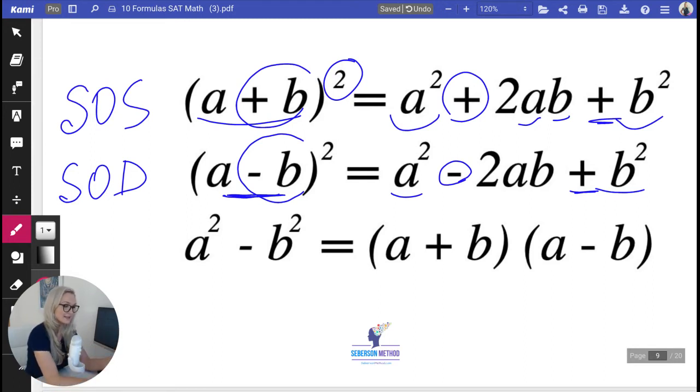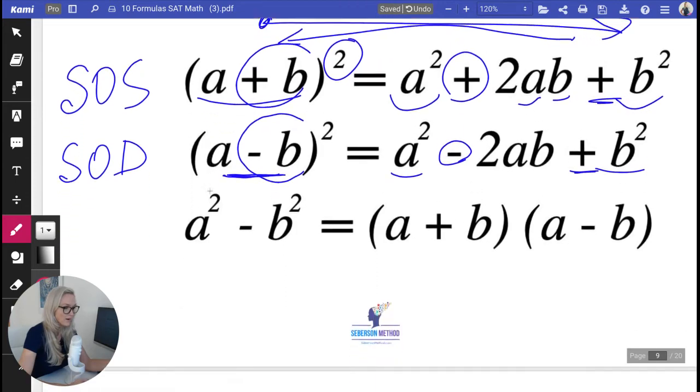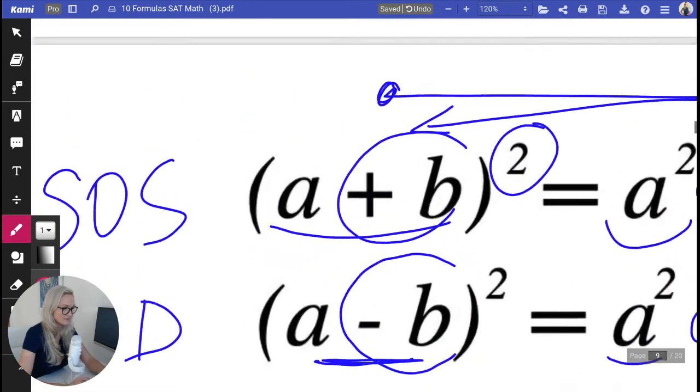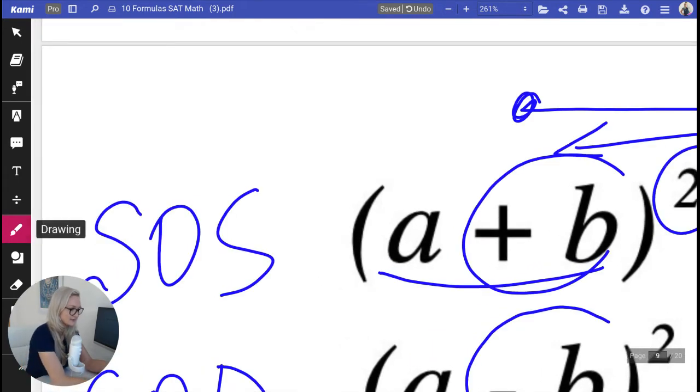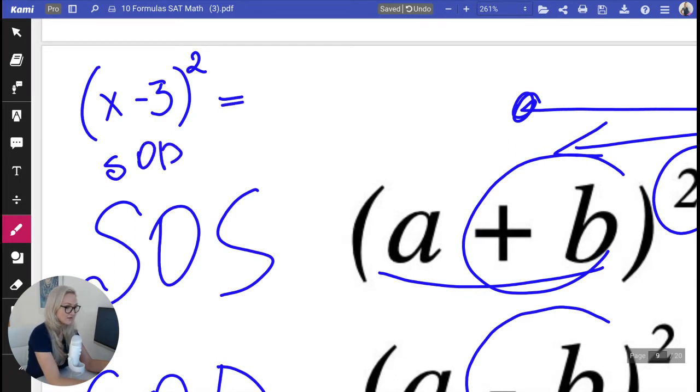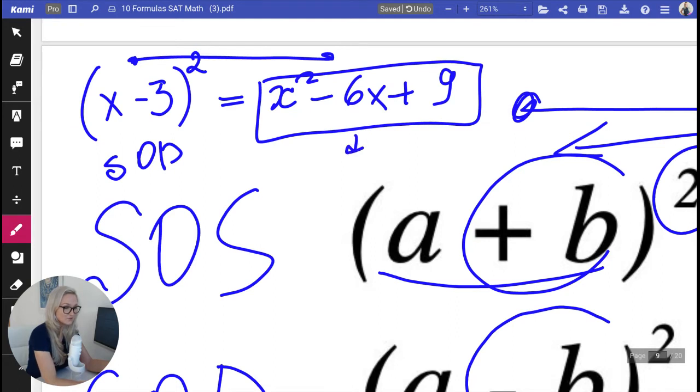So SOS, SOD, super important. Like I said, not only from here to here, but also backwards. Let me show you what I mean by that. So when you see something like, I will just zoom in here, if you see something like x minus 3, all of it is squared, many of you will recognize that this is SOD, square of a difference. And then you have x squared minus 6x plus 9. Also, this is going from right to left, but are you able to see this and quickly understand, oh, what I'm looking at is nothing more and nothing less than just x minus 3, all of it is squared. That is going from right to left and from left to right.